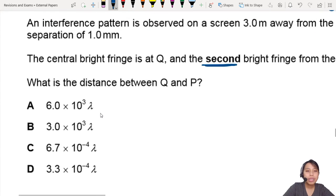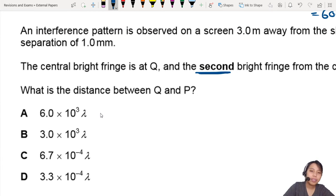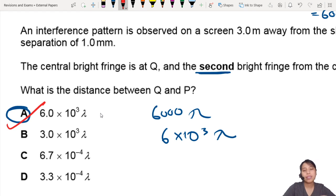So the answer—oh my, they are in prefixes—so 6000 lambda will be equivalent to 6 times 10 to the power of 3 lambda. So the answer will be A, best choice. Yay, the answer is A.